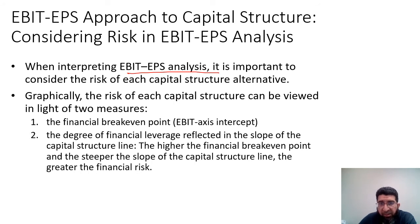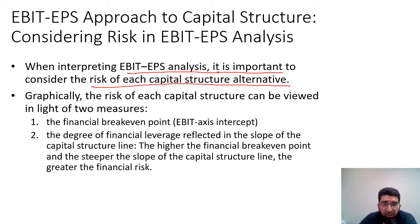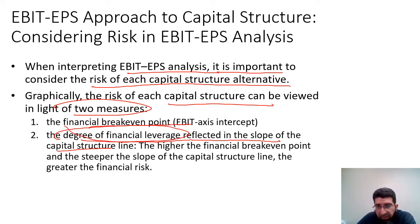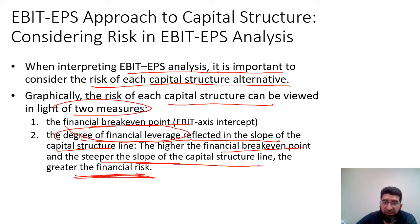When interpreting EBIT-EPS analysis, it is important to consider the risk of each capital structure alternative. Graphically, the risk of each capital structure can be viewed in light of two measures: the financial breakeven point, and the degree of financial leverage reflected in the slope of the capital structure line. The higher the financial breakeven point and the steeper the slope, the greater the financial risk.